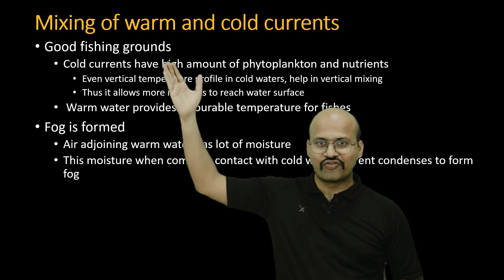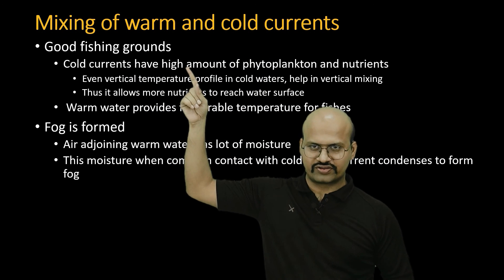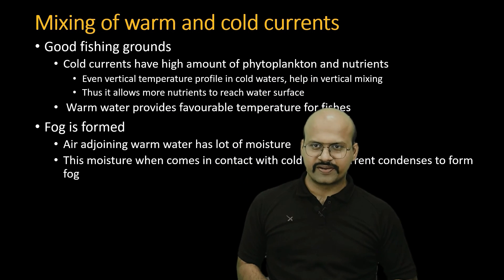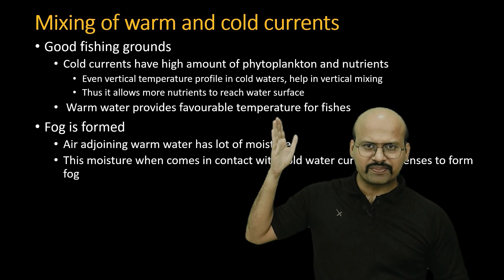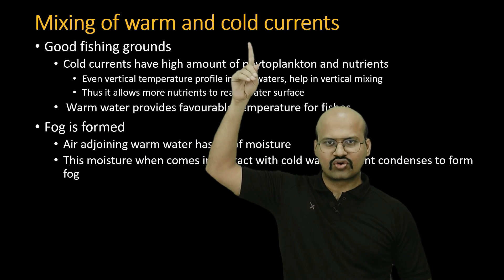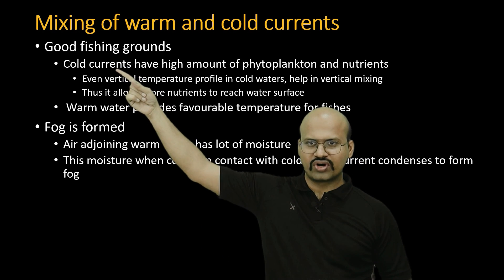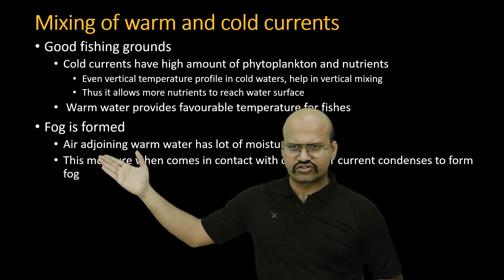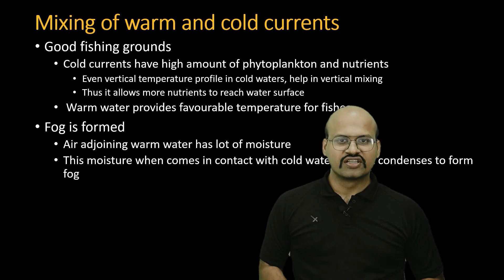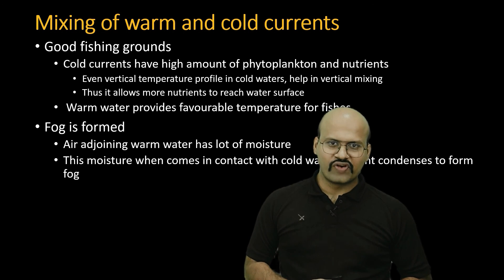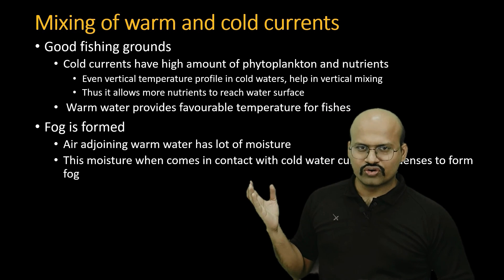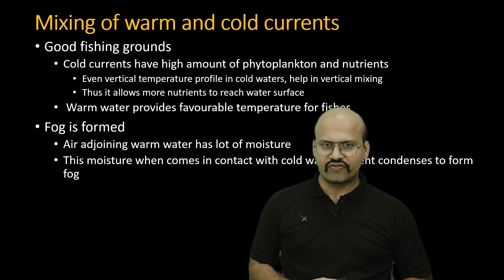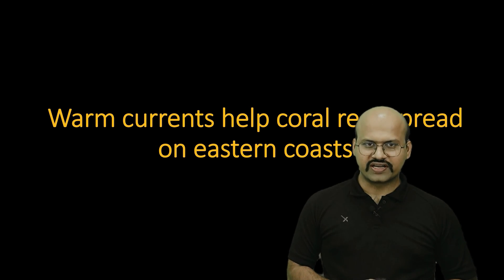To summarize: the mixing of warm and cold currents provides good fishing grounds because cold currents have high amounts of phytoplankton and nutrients due to vertical mixing, while warm water provides a favorable temperature for fish. Fog is also commonly formed in these mixing zones, because the warm ocean currents carry a lot of moisture, and when this moist air comes in contact with the cold ocean currents, the water vapor condenses to form fog.